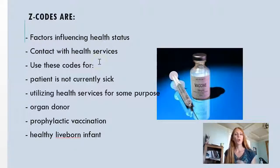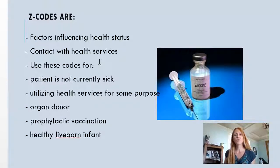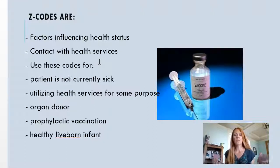Z codes are codes that we use not for a current illness or injury, but for factors that influence a patient's health status and contact with a health service. We use these codes for people who are coming in but aren't currently sick — like somebody coming in for their annual checkup, for the flu vaccine, to see about being an organ donor, or a baby who was born. Z codes cover all those things that might impact somebody's health.